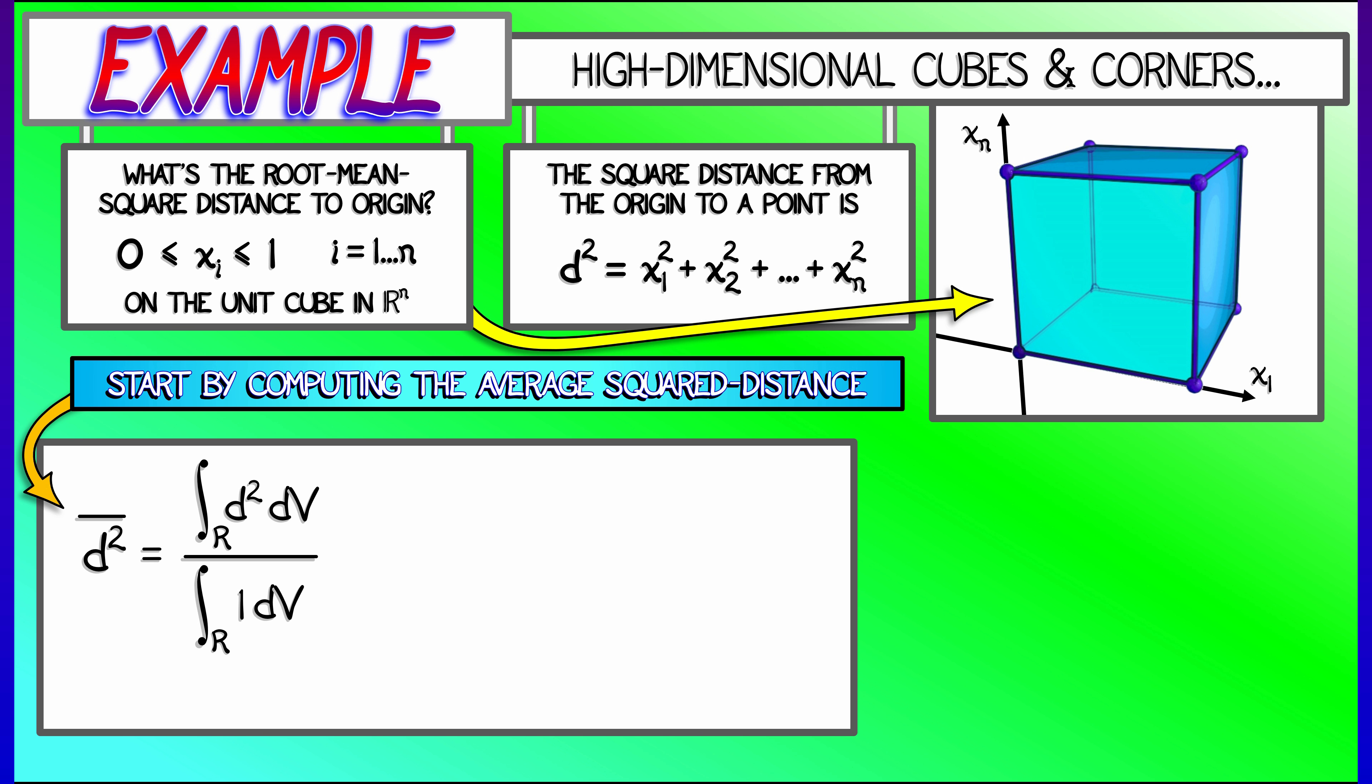So in the end, this breaks down into just the numerator integral. The integral of x_1 squared plus x_2 squared plus dot dot dot plus x_n squared, as each x_i goes from 0 to 1.